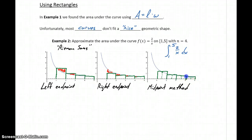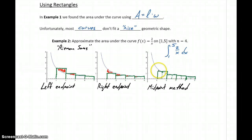My picture got a little sloppy there, but that should be closing off at 4. What we can see here is we still have a little bit of overestimate and a little bit of underestimate — some pieces missing and some extra pieces included — but overall, that amount of extra space is reduced quite a bit when we use the midpoint method.